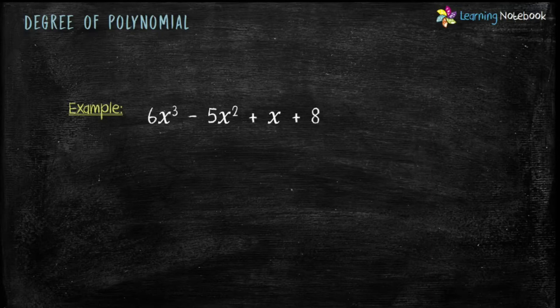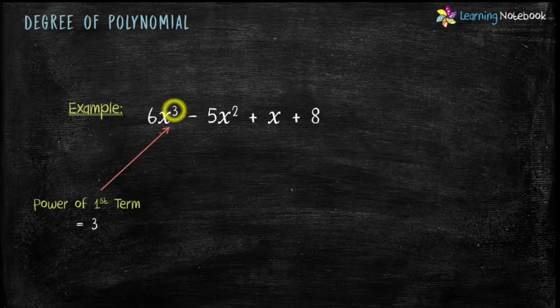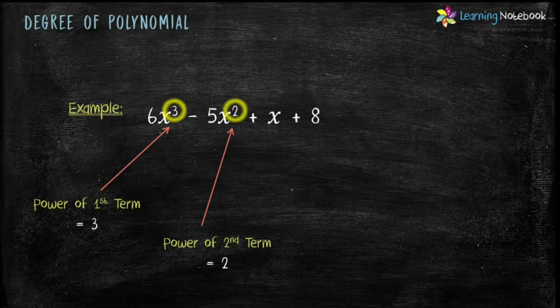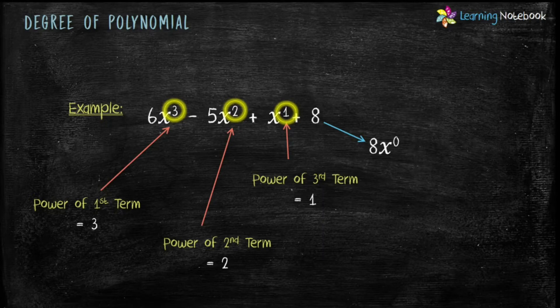Given example is 6x cubed minus 5x squared plus x plus 8. Here the variable is x. Let's check the power of x in each term — the highest power will be the degree of this polynomial. First term is 6x cubed, so the power of x is 3. In second term 5x squared, power of x is 2. Third term x has power 1. And the last term 8 can be written as 8x raised to the power 0, so power of the fourth term is 0.